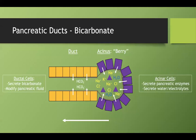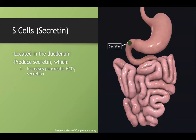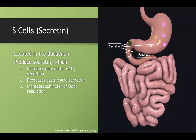Ductal cells are responsible for secreting bicarbonate. S cells in the duodenum produce secretin, which increases bicarbonate secretion from ductal cells, decreases gastric acid secretion, and increases sphincter of Oddi relaxation. The whole point of secretin is to neutralize acid in the stomach — adding more base, reducing acid production, and allowing bicarb to flow out through the outflow tract.